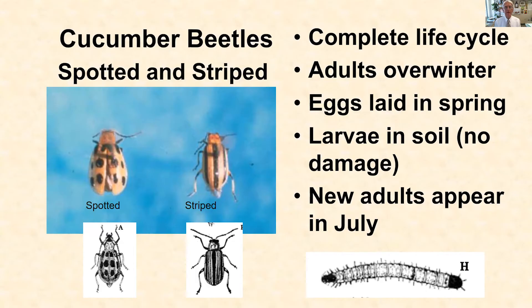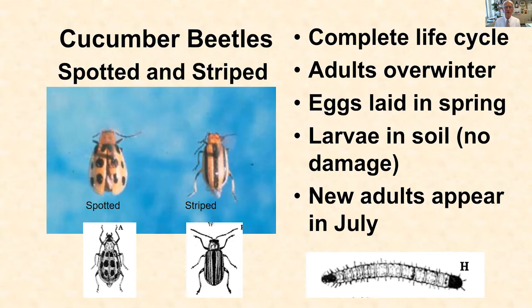They have a complete life cycle: egg, larva, pupa, and adult. The life cycle starts over winter, where the adults are hiding under leaf litter, in tall grass, or under the loose bark of dead trees — just waiting for you to put your melon transplants in the ground. When they come out of hibernation, they begin to lay eggs in the soil. Those eggs hatch into larvae that feed on roots without causing much damage, but by late July they will have pupated and adults emerge from the ground. There is one generation per year.